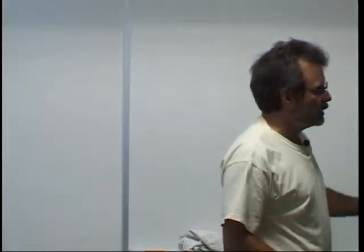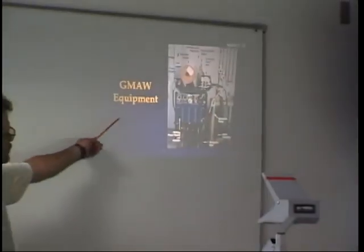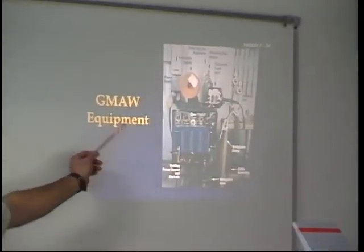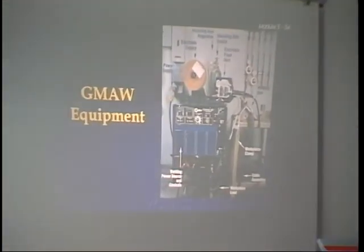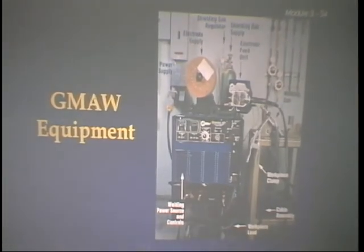This is our second tape for gas metal arc welding, Weld 1770. We're looking at Chapter 22, gas metal arc welding practice, starting on page 807. I put a slide up here — you've seen this one in our last lecture. It shows all the equipment and everything that we're going to be doing.